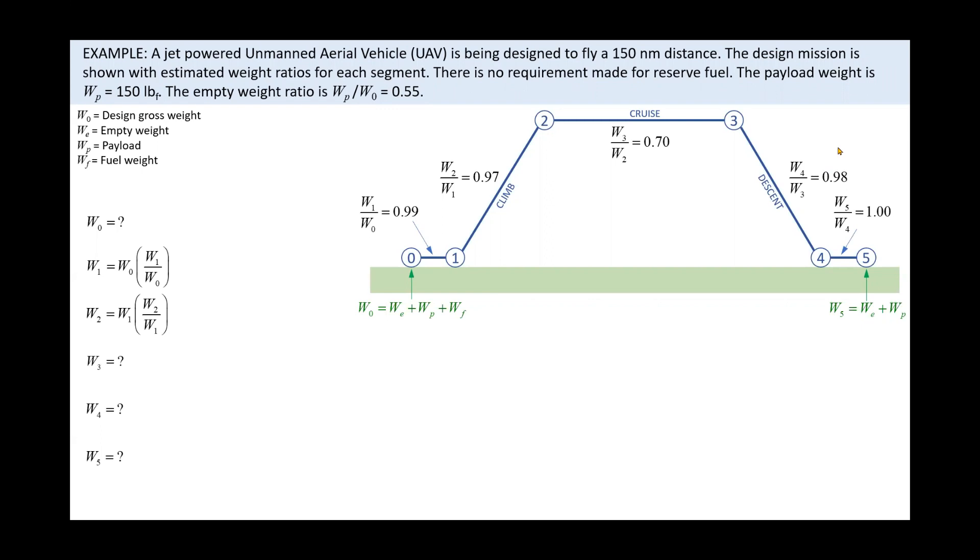Note that we can also write this in terms of the weight at node 0, W0. We do this by taking advantage of how W sub 1 is calculated. To get W sub 2, we multiply the weight ratio W sub 2 by W sub 1 by the product from the previous step, here shown in red.